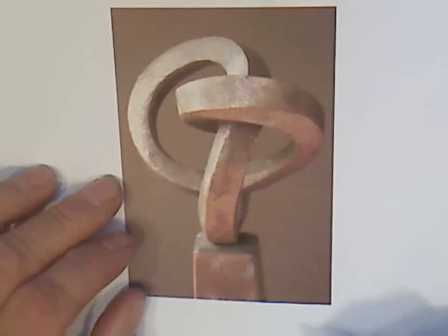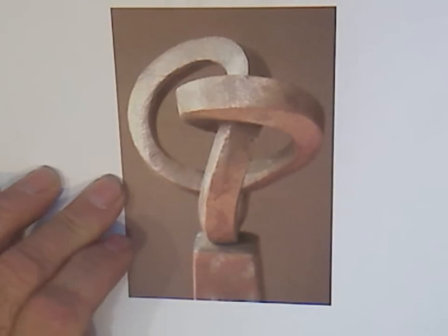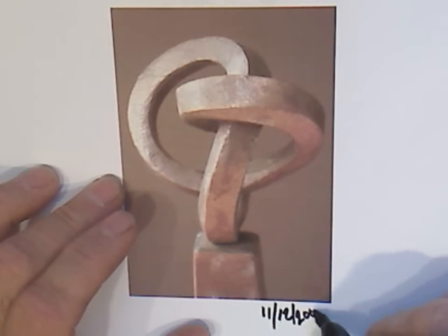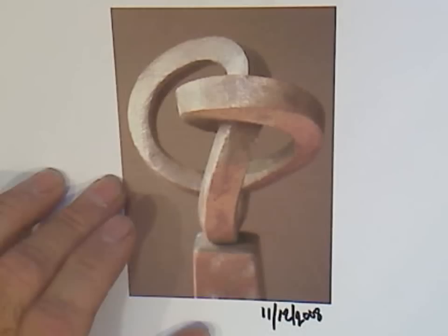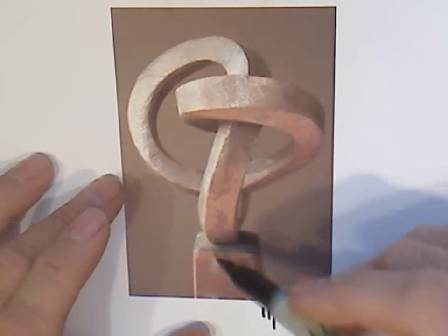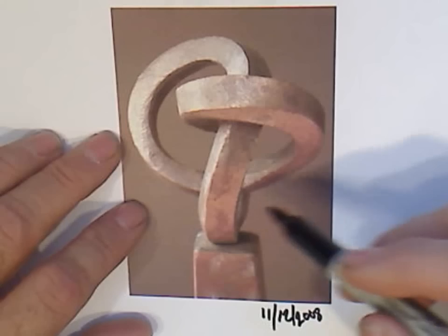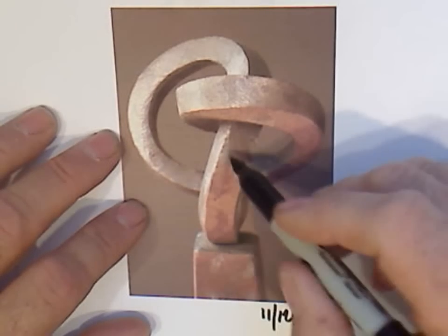This is a study on 11-12, 11-12-2008, and we're looking at the structure of a universal piece. I just want to show the way the lines begin and pass through each other